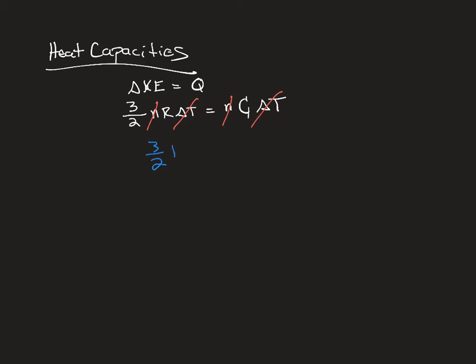You can see right away there are some variables that we can cancel out: the n's and the ΔT's. So we can see the 3/2 times the ideal gas constant equals the molar specific heat.